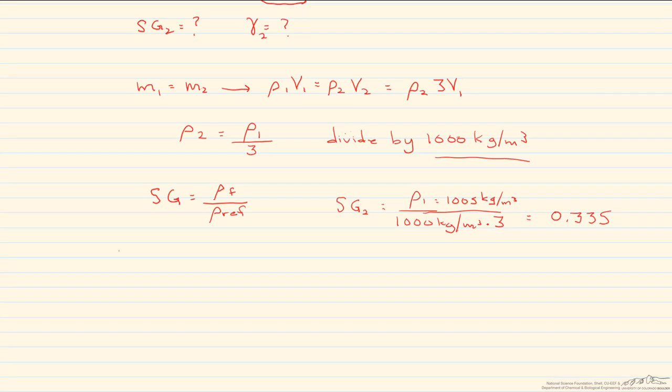So now we want to find the specific weight, which is equal to ρ₂ times g gravity, which is equal to the specific gravity times, and again, this is how you find the density.